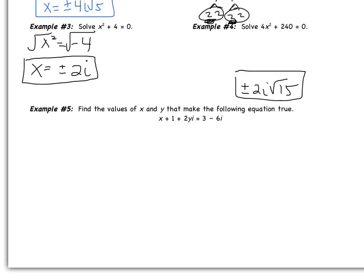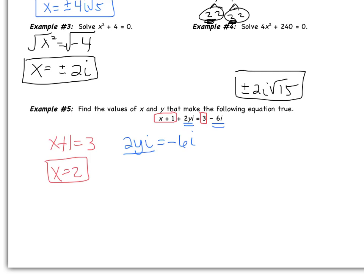Last one is example 5: find the values of x and y that make the following equation true. We have two complex numbers — remember that complex numbers have a real part and an imaginary part. Here is the real part on the left side and here is the real part on the right side; here is the imaginary part and here is the imaginary part. That gives us two equations: x + 1 = 3 from the real parts, and 2yi = −6i from the imaginary parts. Subtracting 1 from the first equation, I get x = 2. From the second equation, if I divide everything by 2i, I get y = −6 ÷ 2 = −3, and the i's cancel. So y = −3. Please bring any questions you have to class and we will do more examples together.